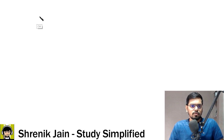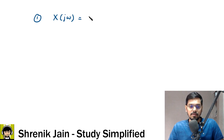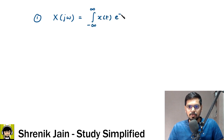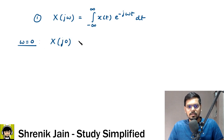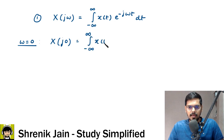First of all, the given question defines capital X(jω), the Fourier transform, as the integral from minus infinity to infinity of x(t) times e to the power minus jωt dt. Then they are asking: can you find capital X(j0)? So put ω equal to 0 throughout, and you will get the integral from minus infinity to infinity of x(t) times e to the power 0 dt.